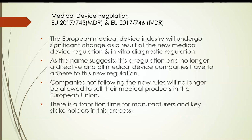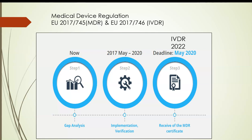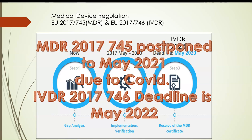There is a transition time for manufacturers and key stakeholders in this process. The Medical Device Regulation 2017-745 and the In Vitro Diagnostic Regulation 2017-746 came into force on the 25th of May 2017. From that period, there has been a transition time to allow Medical Device Manufacturers and Regulators to implement the new regulation. The MDR 2017-745 was postponed to May 2021 due to COVID, and the IVDR 2017-746 deadline is still May 2022.